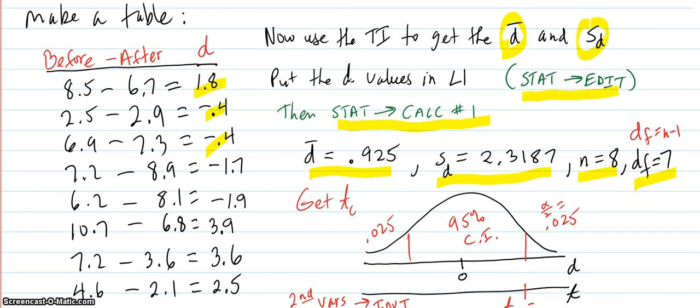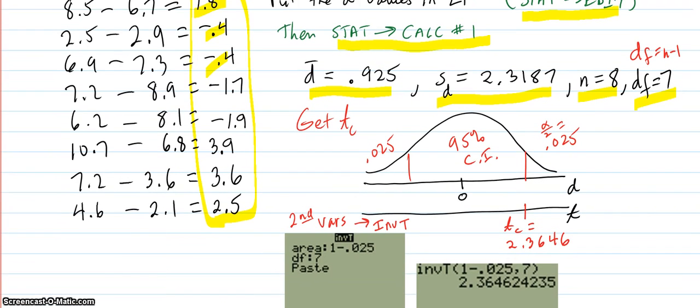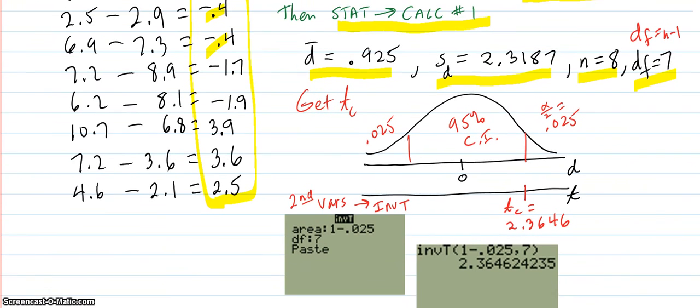So it's just, at this point, it becomes very much like a one mean test because you have one column of data and you're trying to find something out about the mean of that one column of data. So it's just like a one mean test.